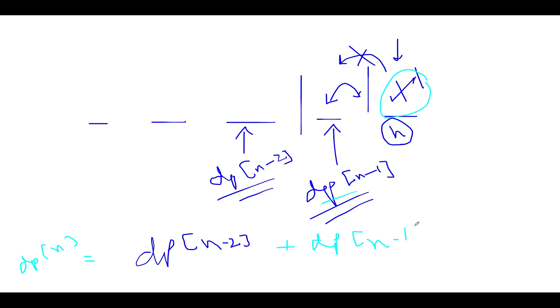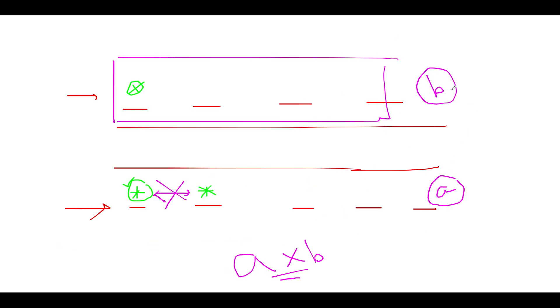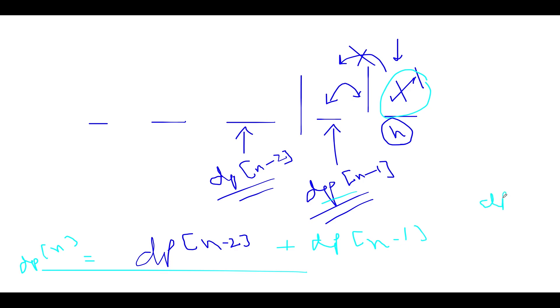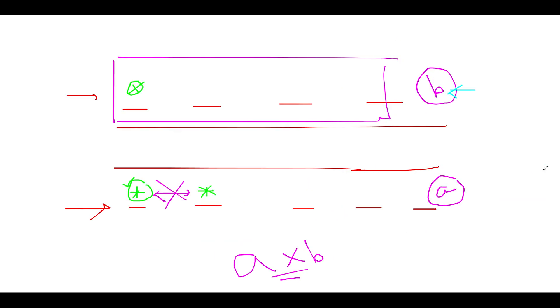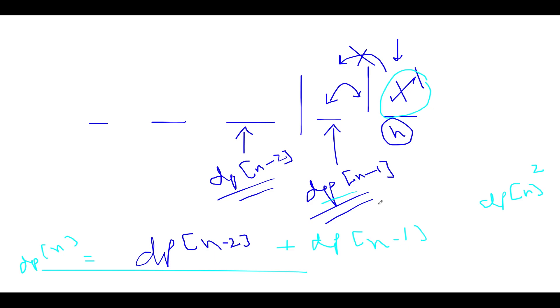This forms the crux of the problem. If you are able to identify this equation, your work is done. For each value of n given in the equation, we will be identifying dp[n] and that simply means we have the values of a and b. We will multiply it with each other, and the final equation that turns out to be is dp[n] square. This would be the answer.